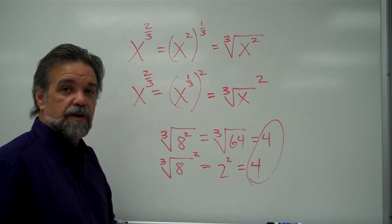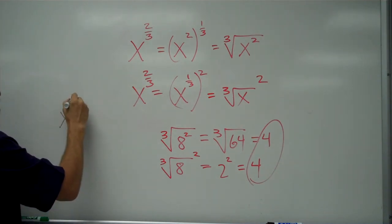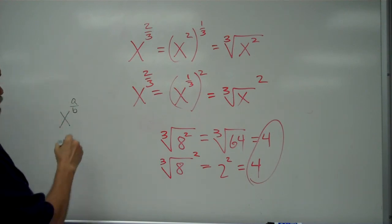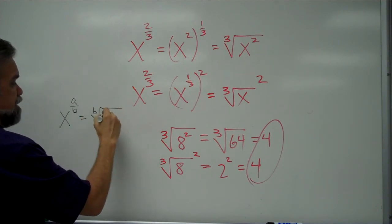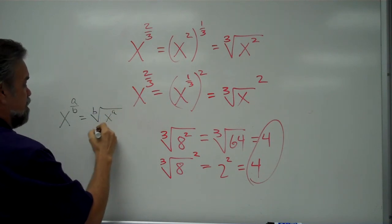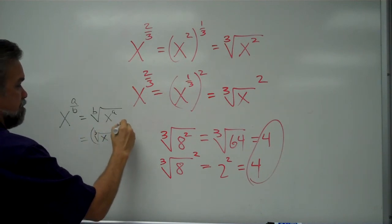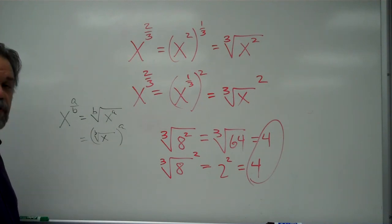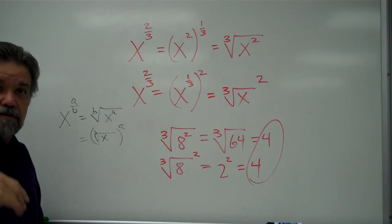But the important thing that I want to stress here is that any number, x to the a over b power, if it's to a fractional power, what that means is it is the bth root of x to the a, or you can also write it the bth root of x to the a power. Those parentheses are just to stress the order that you're doing things in. And those are your last exponent rules. See you next video.